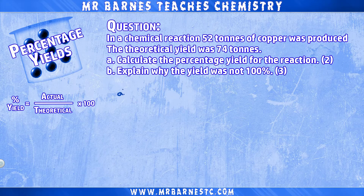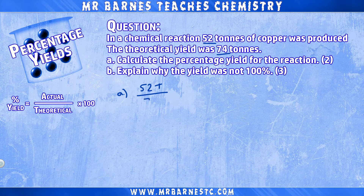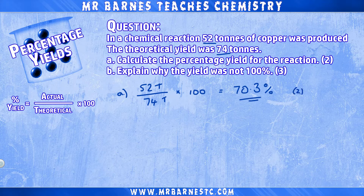which you can see in more detail on the top right of your screen now — our actual yield is 52, our theoretical yield is 74, so 52 divided by 74 multiplied by 100 gives us a percentage yield of 70.3%. So why is it not 100%?